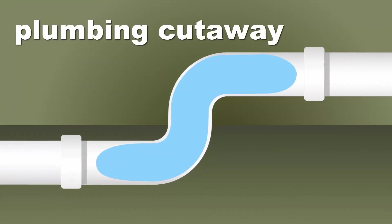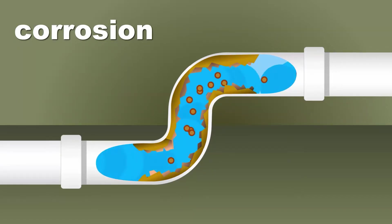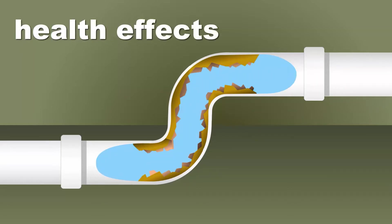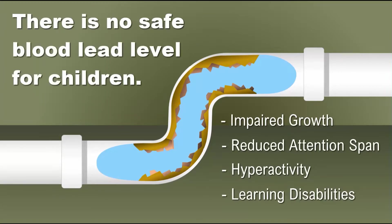Lead in drinking water most often results from corroded plumbing materials that contain lead. Children are most susceptible to the effects of lead because their bodies are still developing; they tend to absorb more lead than adults. In children, lead exposure can cause adverse health effects both physical and behavioral, including impaired growth, reduced attention span, hyperactivity, and learning disabilities. There is no safe blood lead level for children. The best way to know if there is lead in drinking water is to test for it — that's where you can help.